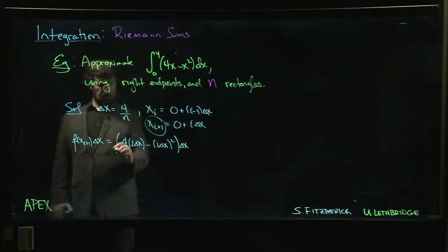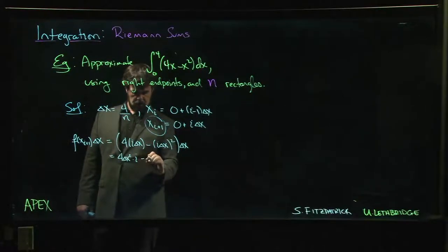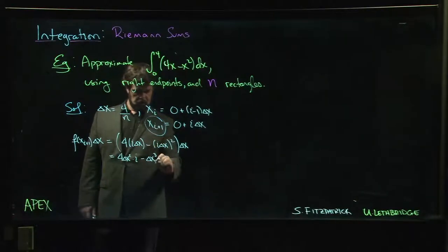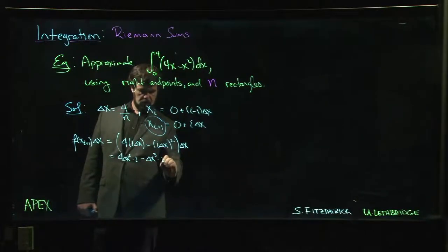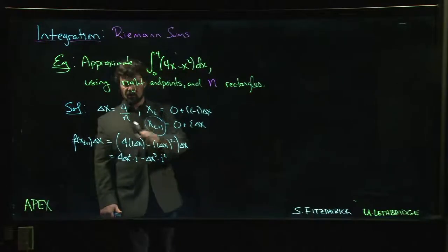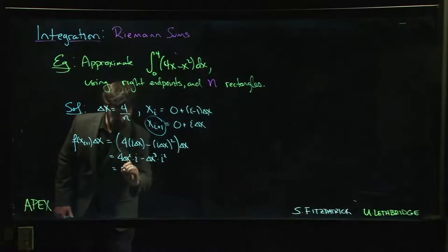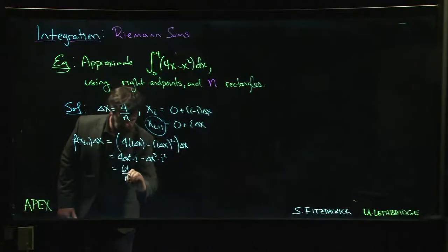So this looks like 4 Delta X squared times i minus Delta X cubed times i squared. Now if you want to put in your Delta X as 4 over n, then what you get here is this is going to be 64 over n squared times i.